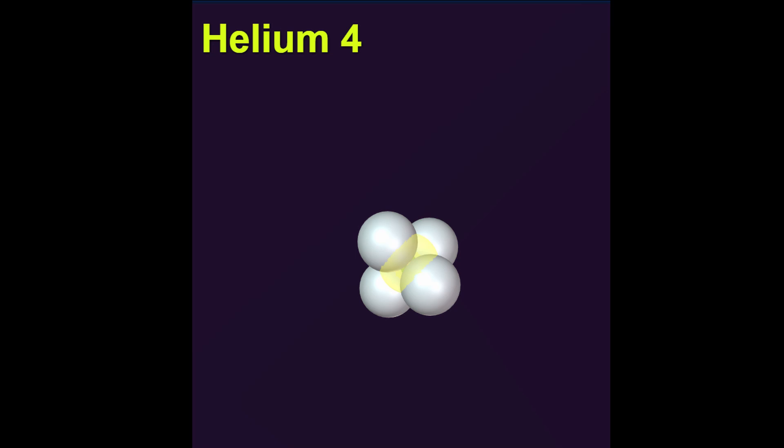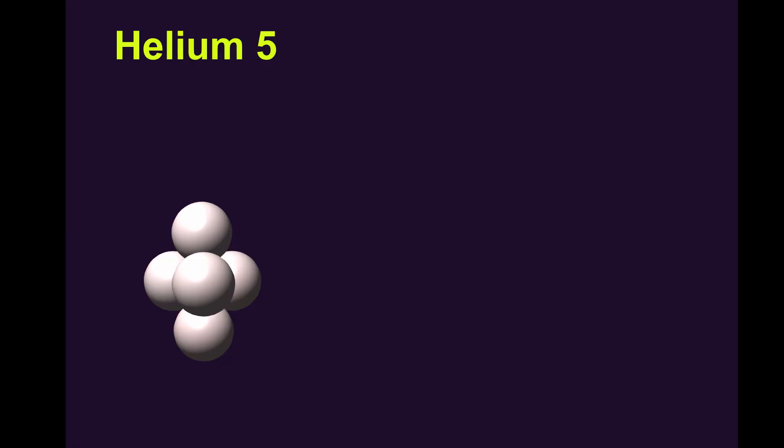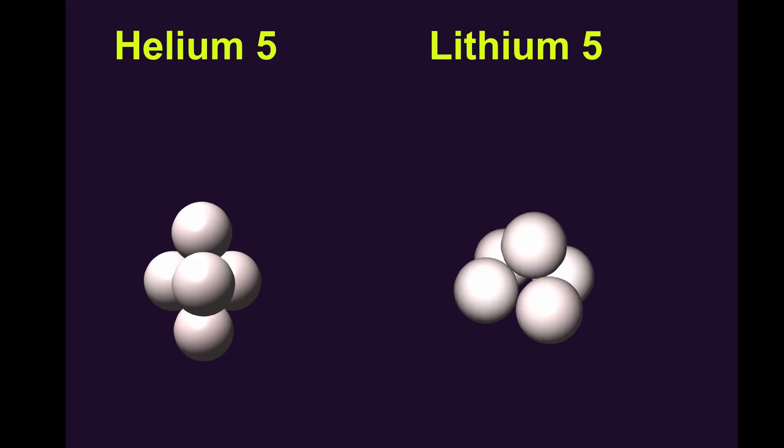According to our rules there should not be any stable atom with five spheres. Both helium 5 and lithium 5 have half lives of 10 to the minus 24 seconds, clearly showing that they are not stable and have only ever been created artificially for these very short durations.